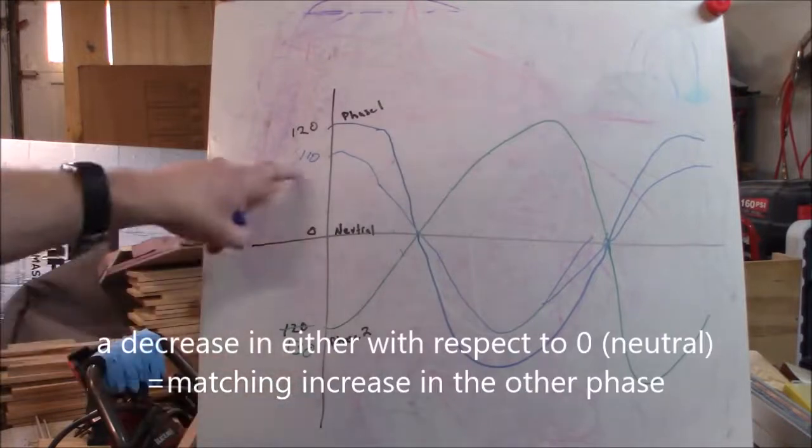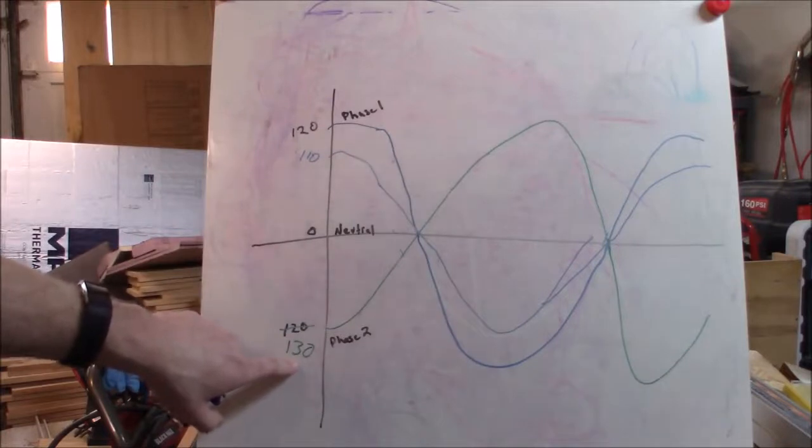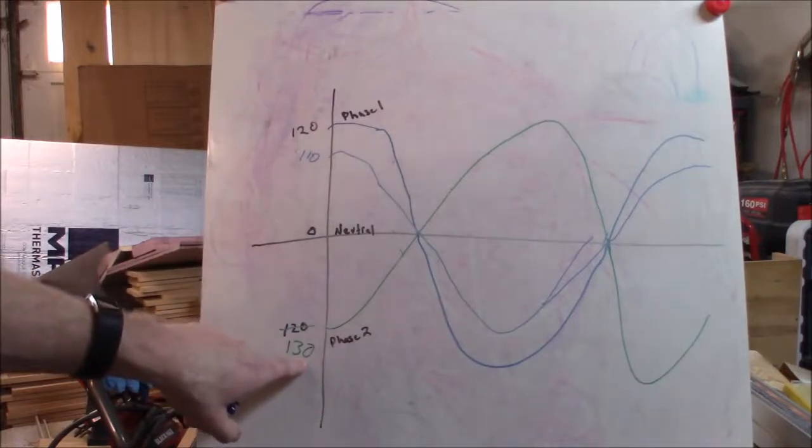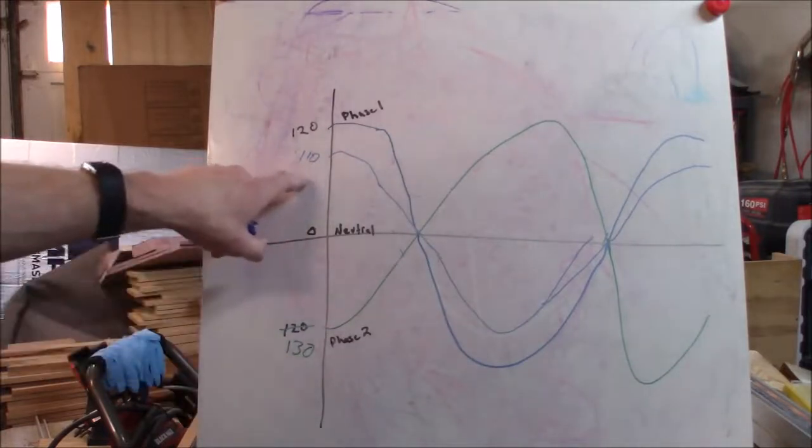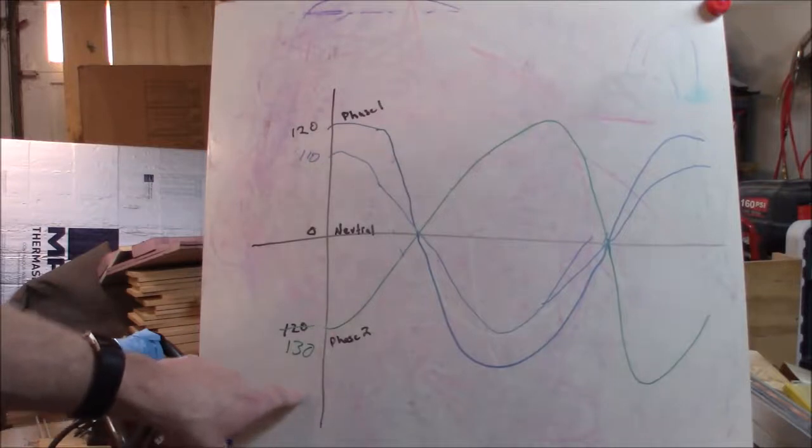Where that's a problem is any device on this other phase that can't handle that increased voltage is going to be damaged. Now, is it going to be immediate? Well, it depends on how far out of balance you get this. At 130 volts, maybe not immediate, but over time definitely. If you drop this lower and this one grows even higher, you could get to the point of an almost instantaneous level of damage.